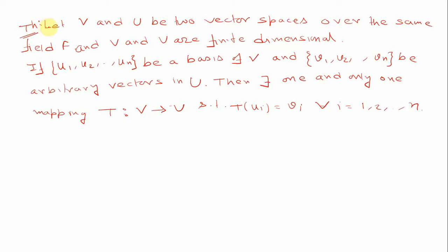This theorem tells us that if we have two vector spaces V and U over the same field F, and both are finite dimensional, and the basis of V is given — say u1, u2, ..., ul is the basis of V — and v1, v2, ..., vn are arbitrary elements in U (not necessarily a basis of U), then there exists one and only one mapping from V to U such that T(ui) = vi. Using this theorem, we'll try to find a linear transformation.